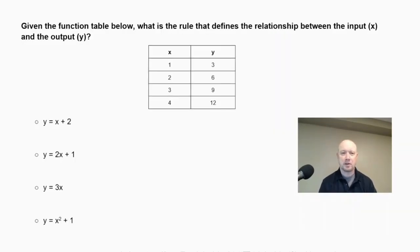Given the function table below, what is the rule that defines the relationship between the input x and the output y? We have our table here and four choices: y equals x plus 2, y equals 2x plus 1, y equals 3x, and y equals x squared plus 1. We're looking at the relationship between x and y.